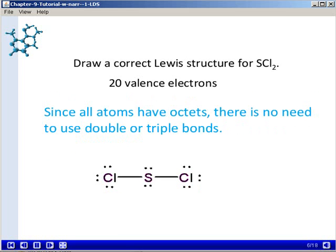And at this point, all of the atoms have an octet of electrons surrounding them, so there's no need to use double or triple bonds. So this is the final Lewis structure for SCl2.